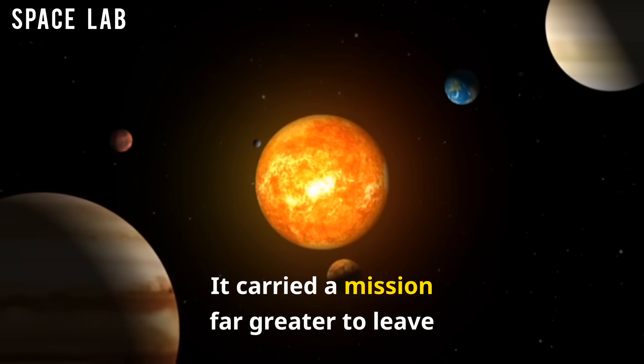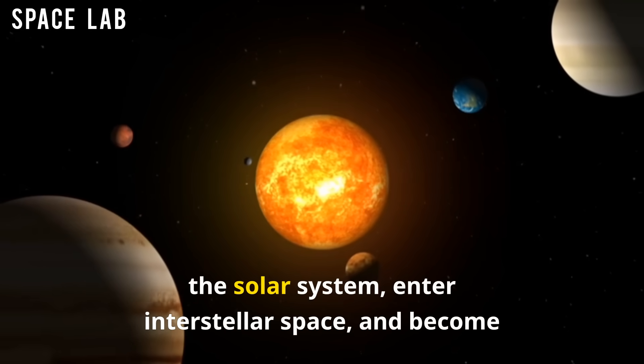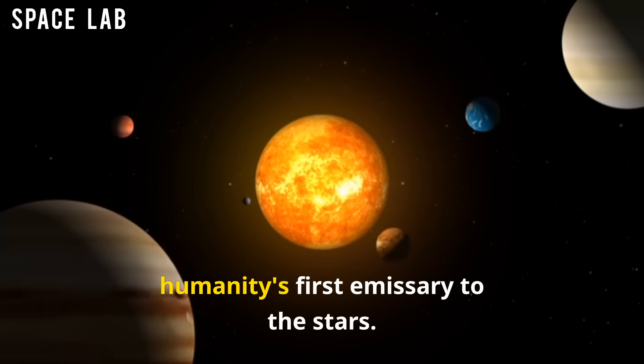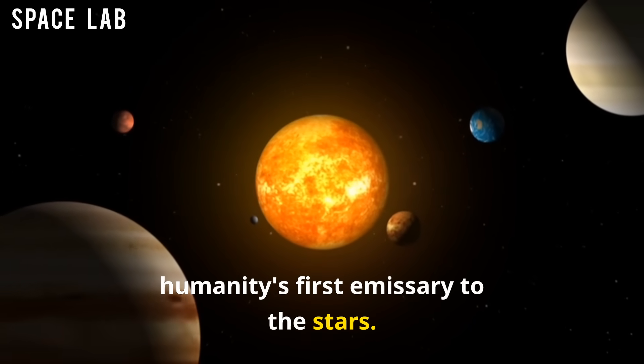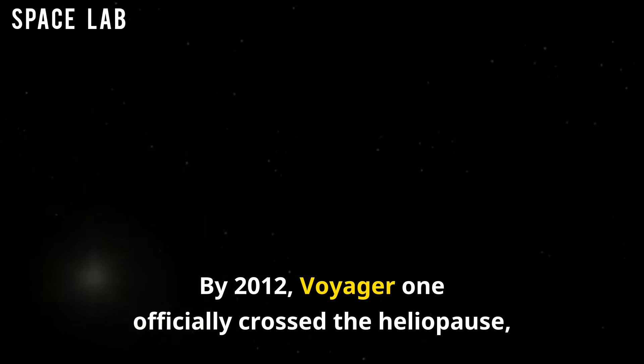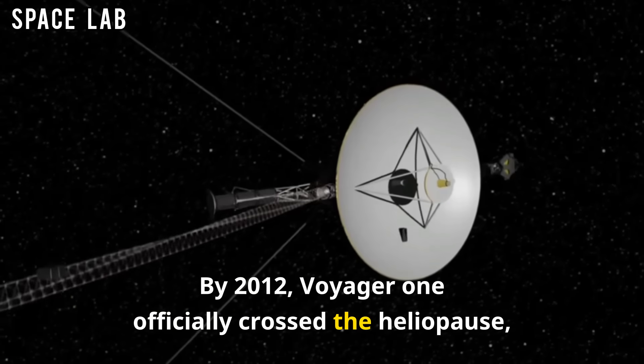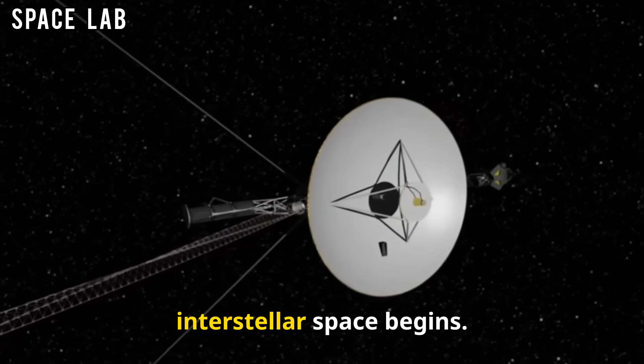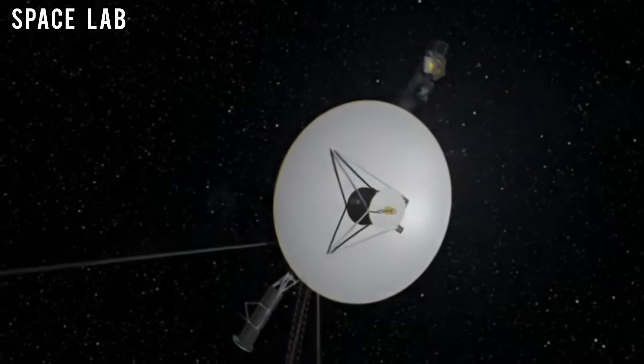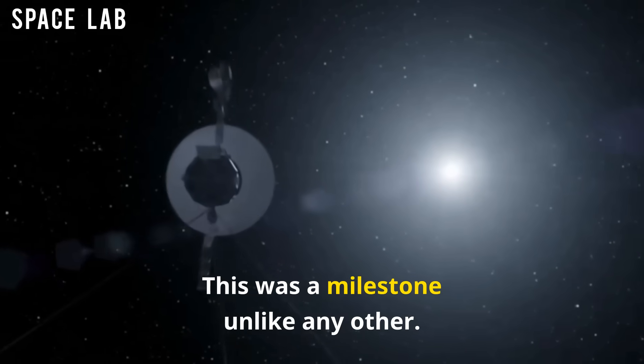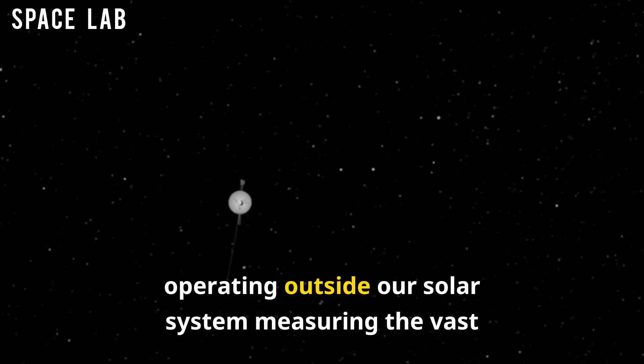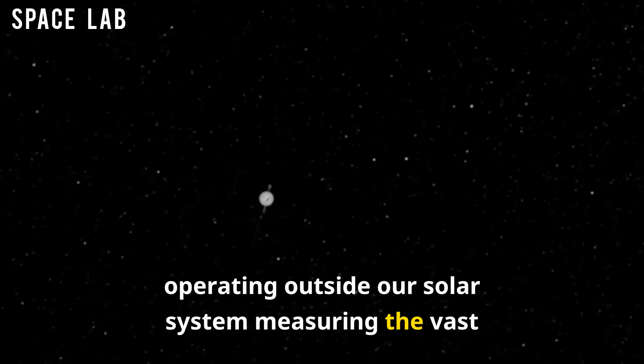It carried a mission far greater: to leave the solar system, enter interstellar space, and become humanity's first emissary to the stars. By 2012, Voyager 1 officially crossed the Heliopause, the boundary where the sun's influence ends and interstellar space begins. This was a milestone unlike any other. For the first time, we had a probe operating outside our solar system, measuring the vast unknown.